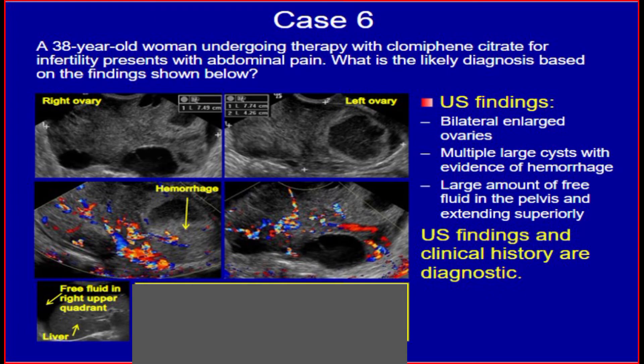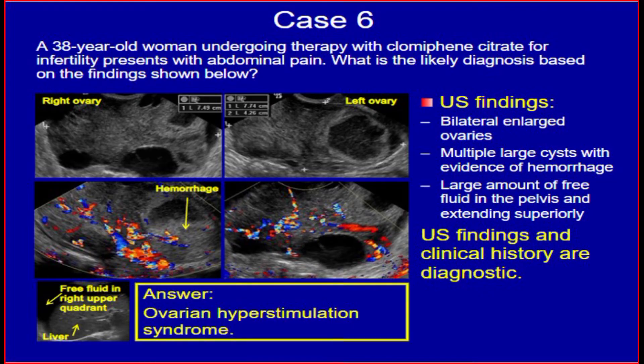Case 6. A 38-year-old woman undergoing therapy with clomiphene citrate for infertility presents with abdominal pain. Ultrasound findings: bilateral enlarged ovaries, multiple large cysts with evidence of hemorrhage, large amount of free fluid in the pelvis extending superiorly. Ultrasound findings and clinical history are diagnostic. The answer is ovarian hyperstimulation syndrome.